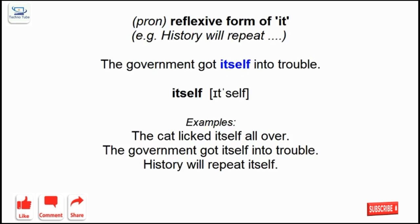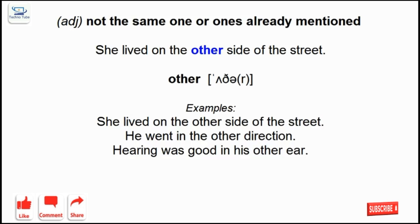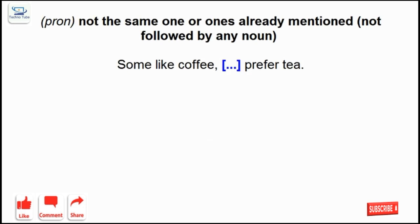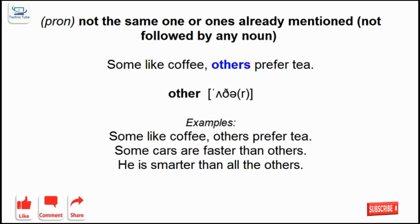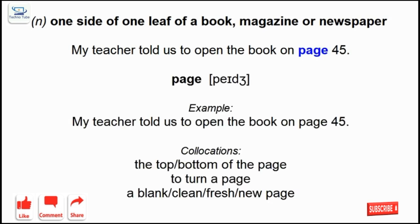Itself: reflexive form of it. Other: not the same one or ones already mentioned; not followed by any noun. Page: one side of one leaf of a book, magazine or newspaper.